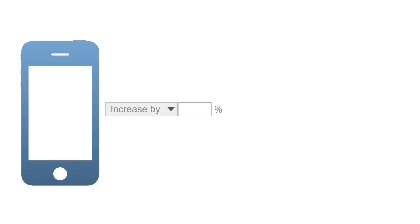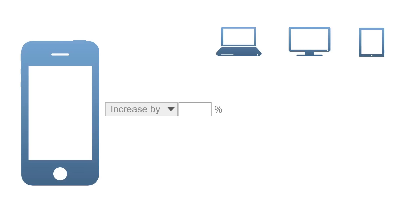You'll set your mobile bid adjustment as a percentage of the default desktop and tablet bids for the campaign. That is, your mobile bid will be the same as, less than, or greater than your default bid by the percentage you specify.